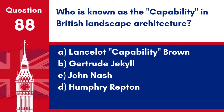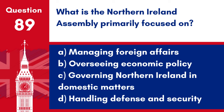Question 88. Who is known as 'Capability' in British landscape architecture? a. Lancelot Capability Brown. b. Gertrude Jekyll. c. John Nash. d. Humphrey Repton. Answer: a. Lancelot Capability Brown. Lancelot Brown, known as Capability Brown, was a renowned British landscape architect famous for his naturalistic designs.